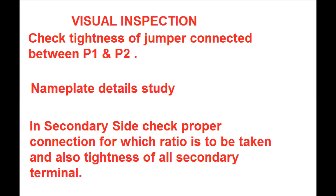The tightness of the jumper shall be checked properly. Then the nameplate details of the CT shall be studied carefully. From the nameplate, the required CT ratio for secondary connection is determined — for example, if 1000/800/400 by 1 CT ratio is available, there will be four terminals on the secondary side: S1, S2, S3, and S4. If a 400/1 CT ratio is required, the secondary connection shall be between S1 and S2 terminals.